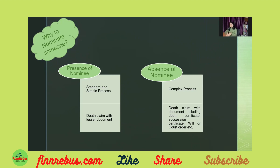So in this situation, take a few minutes in your life and please add your nominee. This way, your loved ones can access your wealth through a simple process, not a complex one. The number of documents required — such as a death certificate, a succession certificate, a will, or court orders — makes it a lengthy, complex process. What makes it easy is adding your nominee.